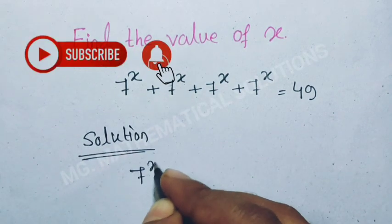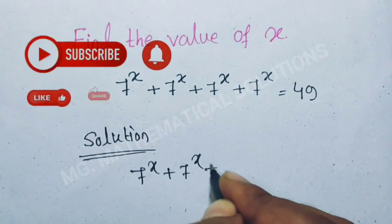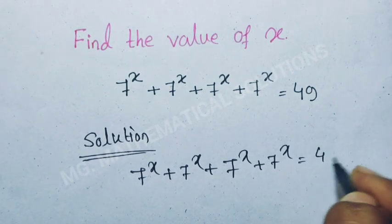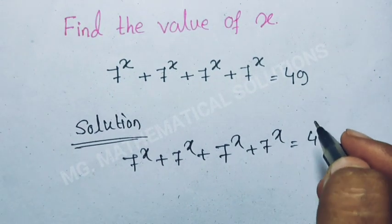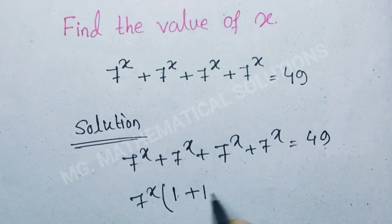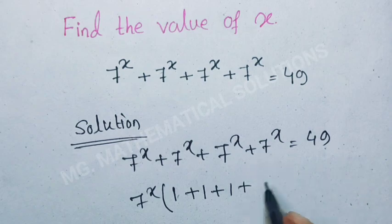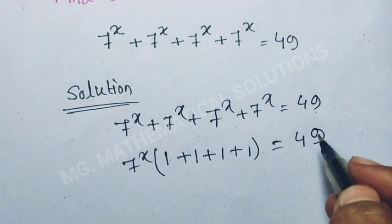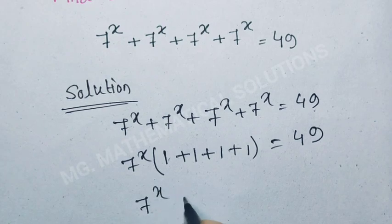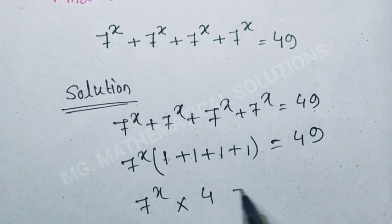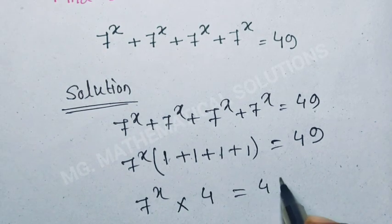7 to the power x plus 7 to the power x plus 7 to the power x plus 7 to the power x equal to 49. Now we are taking common 7 to the power x, so 7 to the power x times 1 plus 1 plus 1 plus 1 — which means 4 — equal to 49.